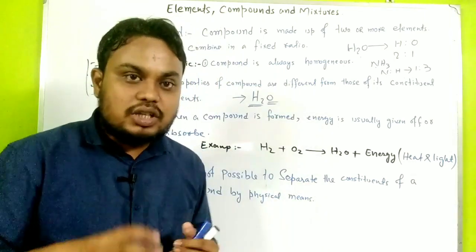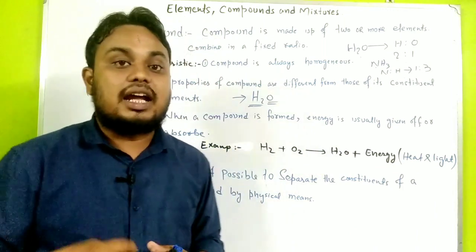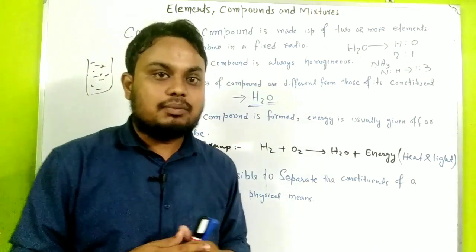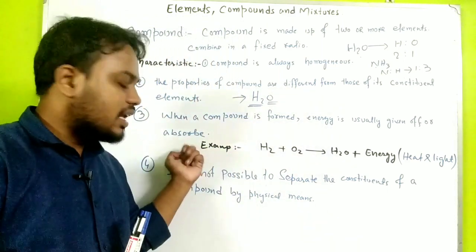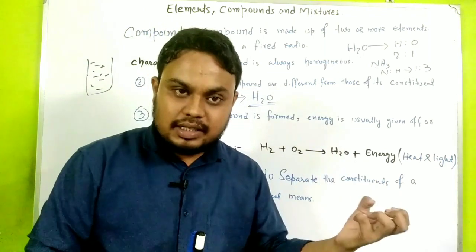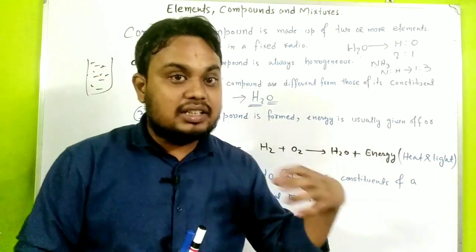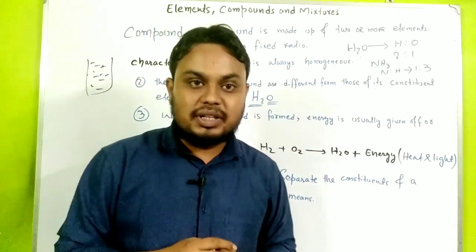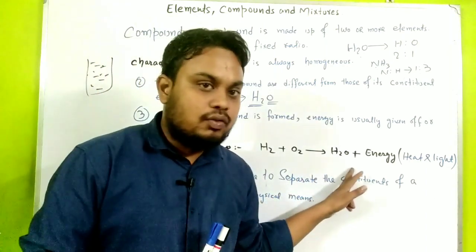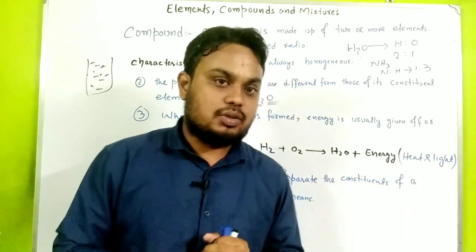When energy is absorbed during a reaction, it is called endothermic — extra heat supply is needed to maintain the temperature. When energy is released, it is called exothermic — energy is released in the form of heat and light. For example, when hydrogen combines with oxygen to form water, energy is released in the form of heat and light.